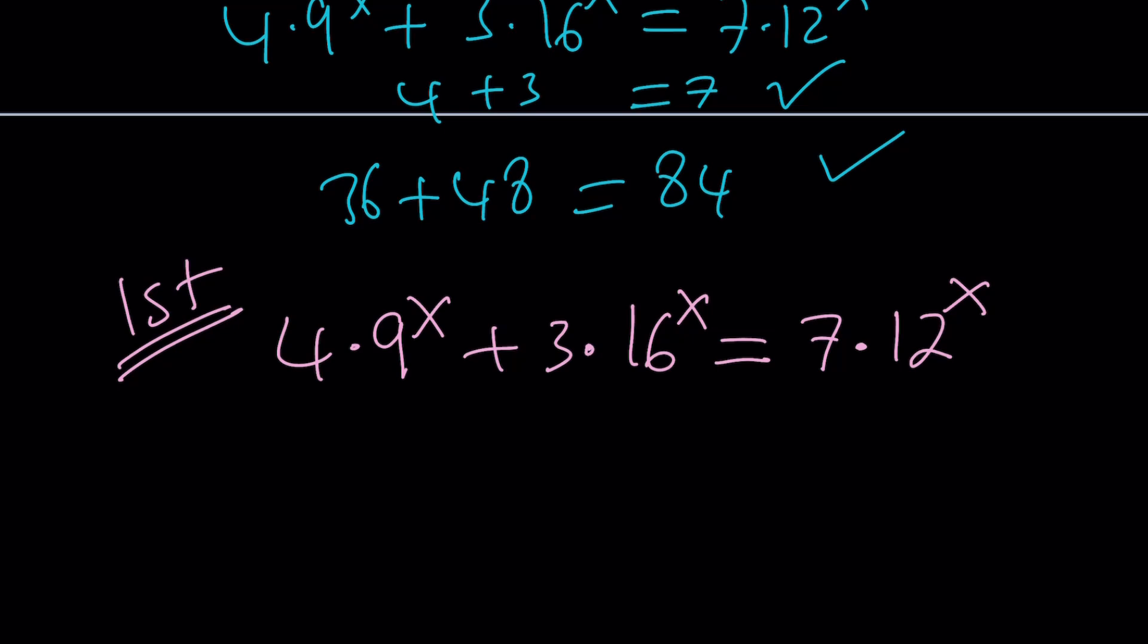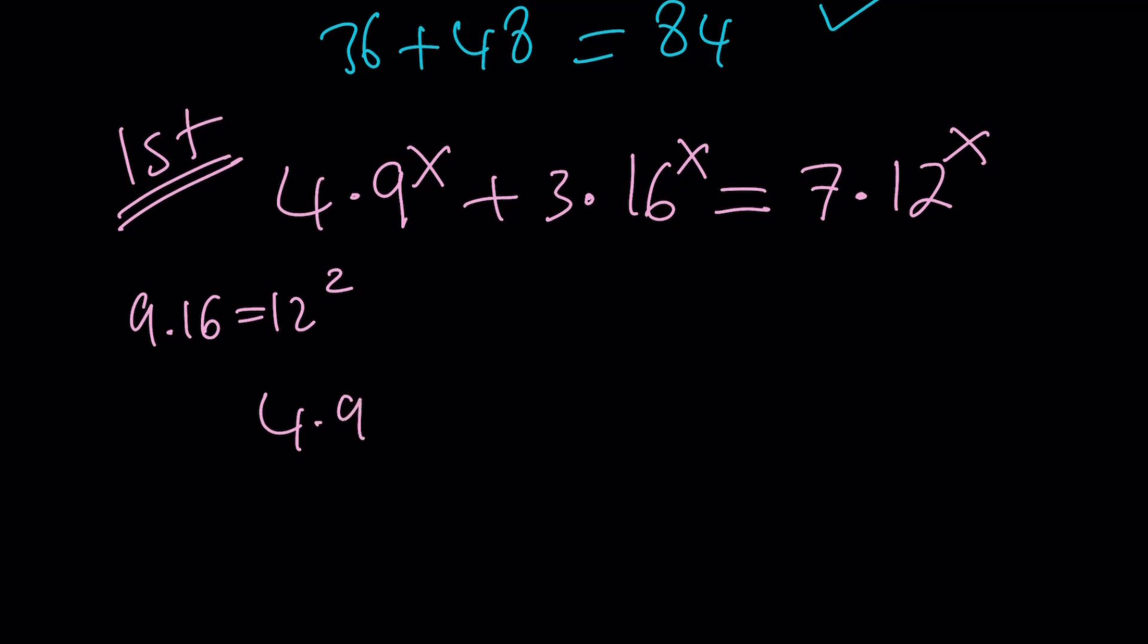But anyways, we're going to divide. Again, the same thing applies. 9 times 16 is 12 squared. So we're going to go ahead and divide everything by the highest base, which is 16 to the power x. So let's go ahead and do it. Divide by 16 to the x. Divide by 16 to the x. And divide by 16 to the power x. All right.